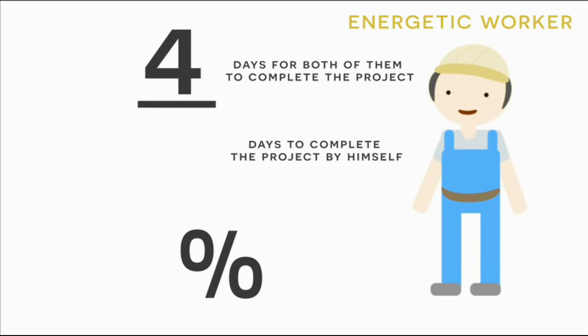And in the denominator of this fraction, we're going to put the time that it takes for him to complete it by himself. So in the denominator of this fraction, we'll put the number six because it takes him six days for the energetic worker to complete the project by himself. So in the four days that they work together, the energetic worker is going to complete four-sixths of the project, or two-thirds, roughly 67%.